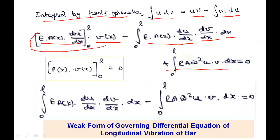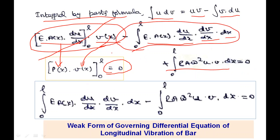The boundary term v·EA(x)du/dx represents work done due to external force, since EA(x)du/dx is the force P(x). For free vibration, there is no external force acting, so this term equals 0 and can be eliminated. What remains is: minus the integral from 0 to L of EA(x)(du/dx)(dv/dx) dx, plus the integral from 0 to L of ρAω²u·v dx = 0. Moving the first term to the other side, we get the weak form.